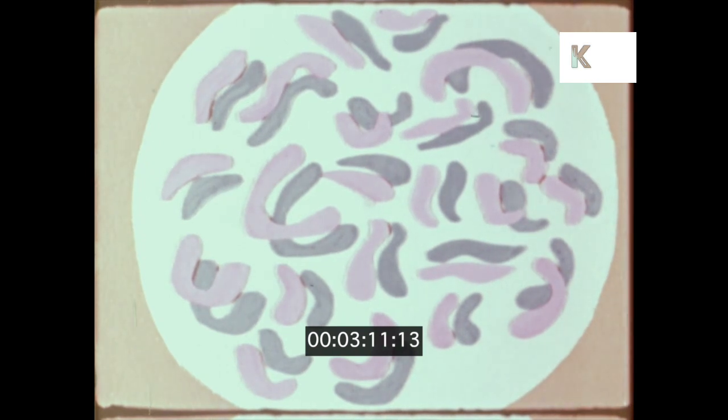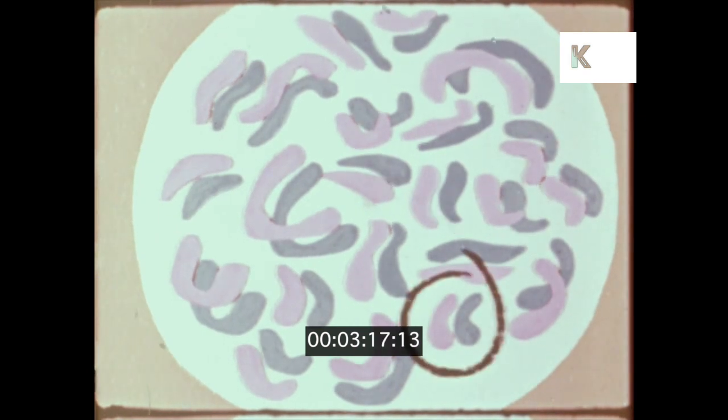Those tiny chromosomes contain all the information as to how the baby will look. And also whether one is a boy or a girl depends mainly on this 23rd pair of chromosomes called the sex chromosomes.